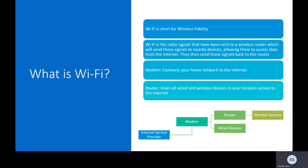The coax cable will connect to a modem, which gives your network access to the internet. Ethernet cords can then attach to the modem and to all your wired devices, such as desktop computers, and to your router. Once the router is connected, that turns on Wi-Fi so all your wireless devices can now access the internet.